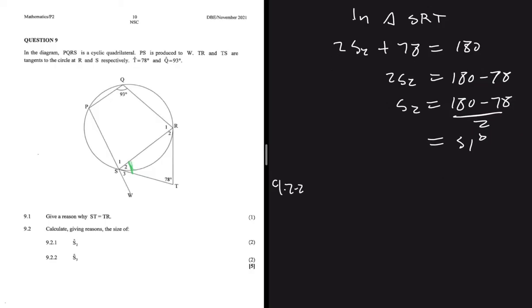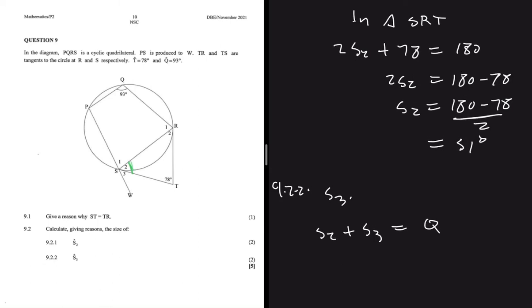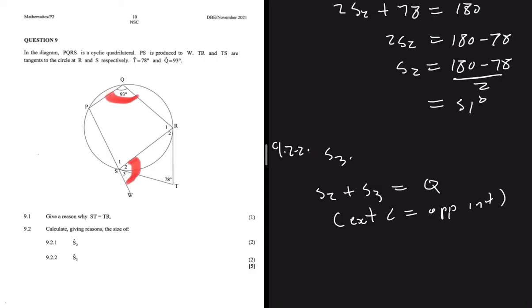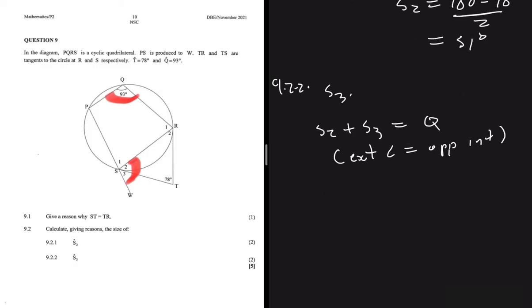Now we move to 9.2.2 which says calculate S3. S2 plus S3 equals angle Q because an exterior angle of a cyclic quadrilateral equals the opposite interior angle. This angle here equals this angle because PQRS is a cyclic quad. We have 51 degrees plus S3 equals 93, so S3 equals 93 minus 51, which equals 42 degrees.